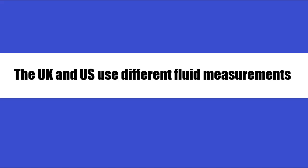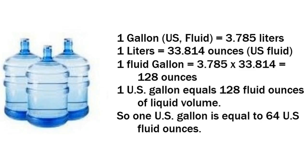The UK and US use different fluid measurements. One gallon (US fluid) equals 3.785 liters. One liter equals 33.814 ounces (US fluid). One fluid gallon equals 3.785 × 33.814 = 128 ounces. So one US gallon equals 128 fluid ounces of liquid volume.